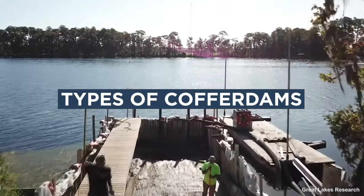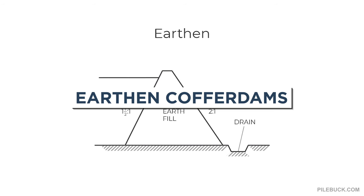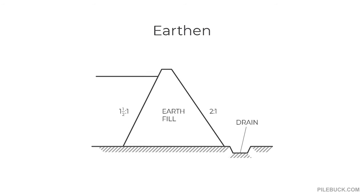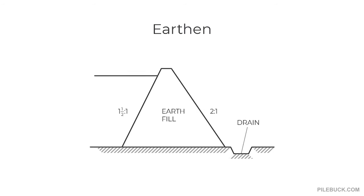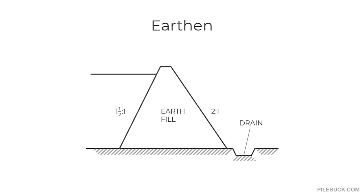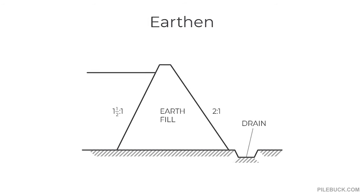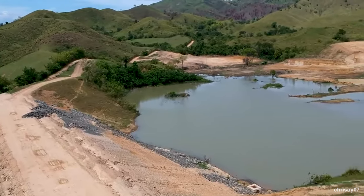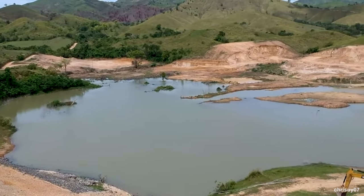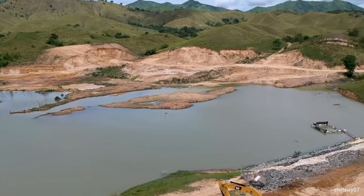Types of Coffer Dams — Earthen coffer dams: Earthen coffer dams are the simplest to construct but have somewhat limited use. An embankment made of earth is used to enclose the work area. Earthen coffer dams are best for areas with a low depth of water flowing at a low velocity. Typically, the top of the embankment is built approximately one meter above the water.